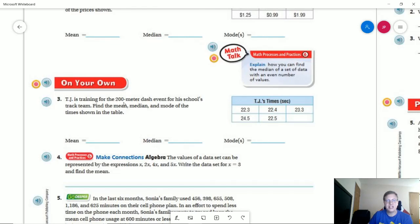So TJ is training for the 200 meter dash event. So we want to find the median. And I usually start with that. So for the moment, what our first point would be would be 22.3, followed by 22.5, I'm sorry, 22.4. This is why I try to do this part first. Then 22.5 would be our center point. And then the other two would be larger.